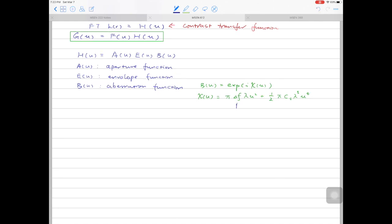The delta f here is how much you underfocus. And the Cs is our old friend called spherical aberration coefficient.